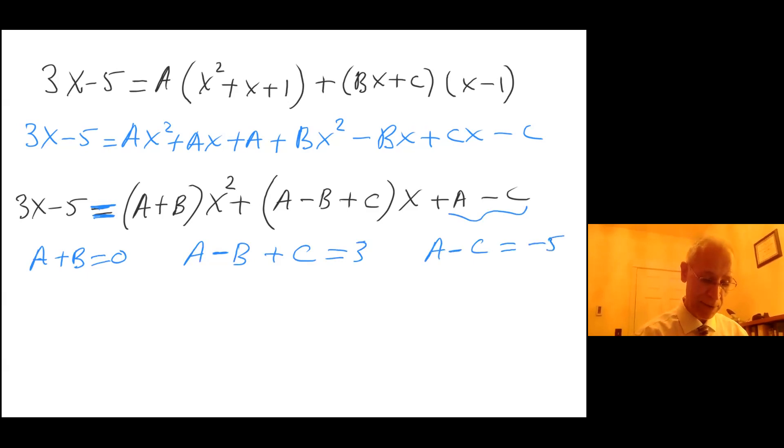And free floating variable numbers: A minus C must equal negative 5. You can think of this 5 as 5x to the 0 if you like, but it's not necessary. Now I have three equations and three unknowns. From the first one I can say that A equals minus B, and then I can put that in here and here. Then I'm going to have minus B minus C equals negative 5, so C equals 5 minus B.